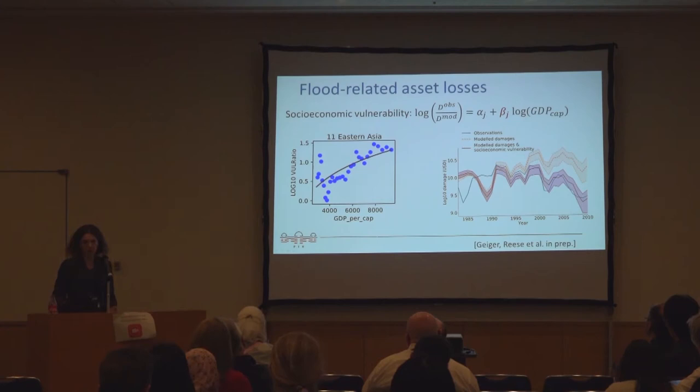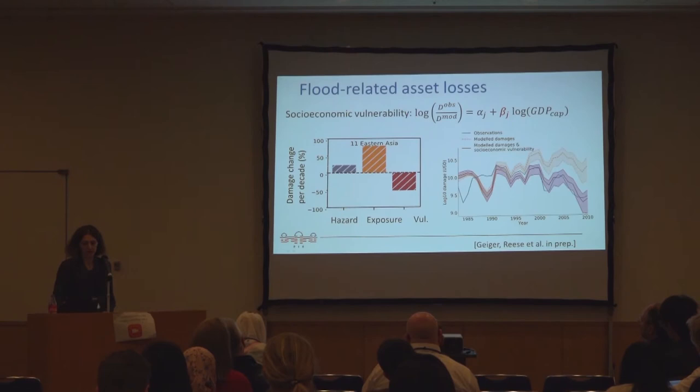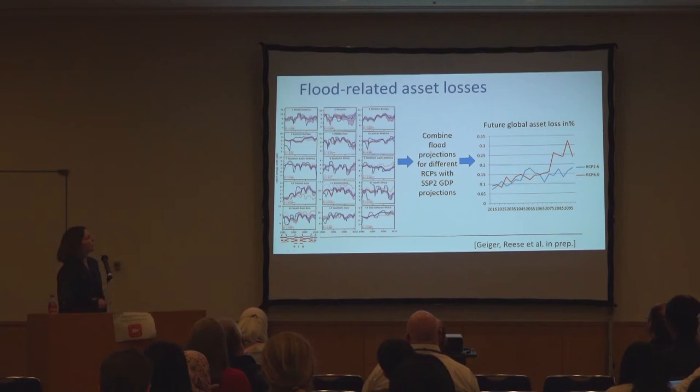What we do — simplified again — is assume that flood protection is related to GDP per capita, and we do a regression at a regional resolution on this vulnerability ratio, which is simply the difference between the observed damages and the model damages. We find GDP per capita as a driver to model this change in vulnerability. When we do that, we get the red line, and we capture the effects much better. We can see that damages are driven to some degree by changes in hazards, to a large degree by exposure, and then by decreasing vulnerability, which is very region-dependent.